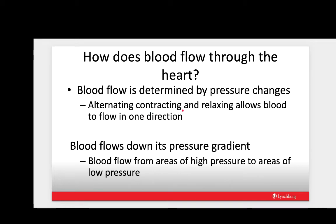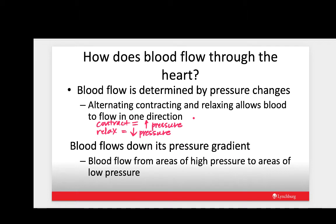Blood flow is determined by pressure changes. When we contract chambers of the heart, it generates increased pressure in that chamber. When a chamber is contracting, pressure increases; when a chamber is relaxing, pressure decreases. We have these cyclic changes in pressure that push blood in one direction. Blood always flows down its pressure gradient from an area of high pressure to an area of low pressure.